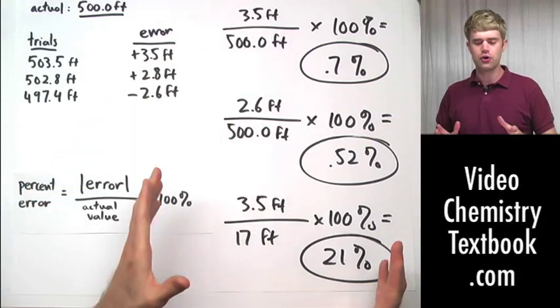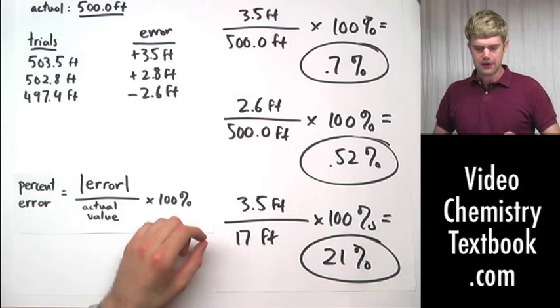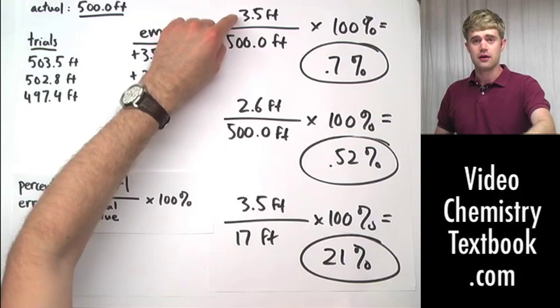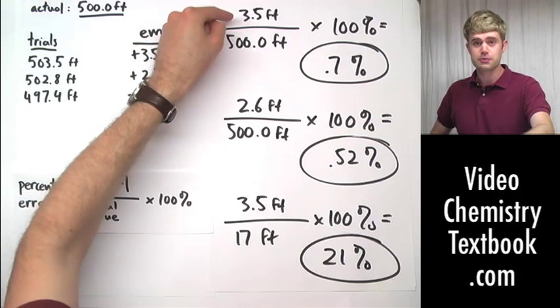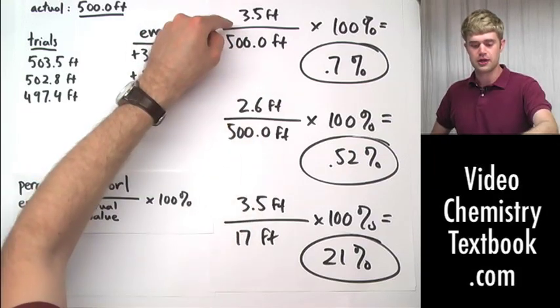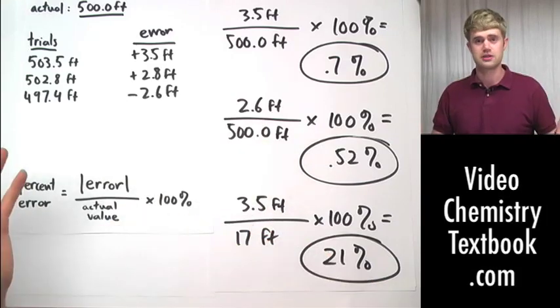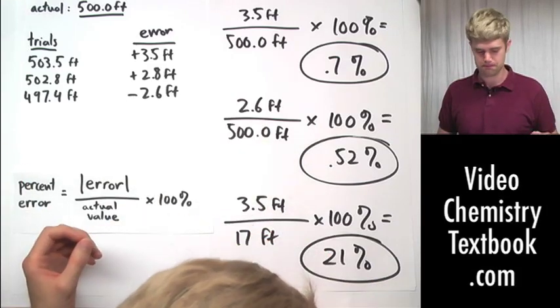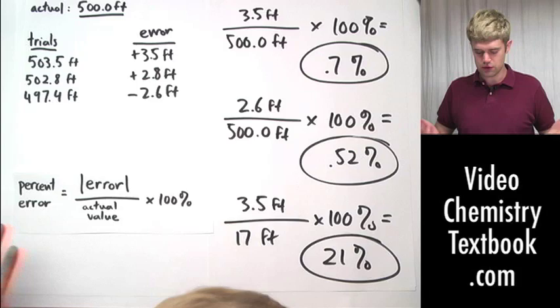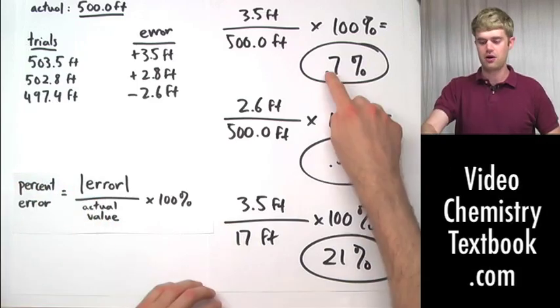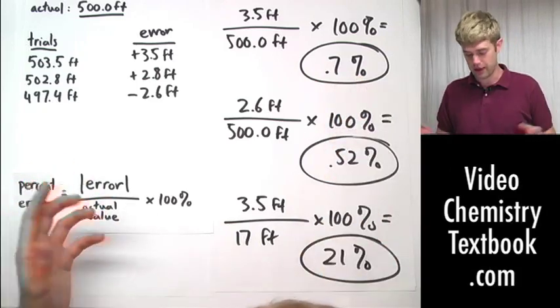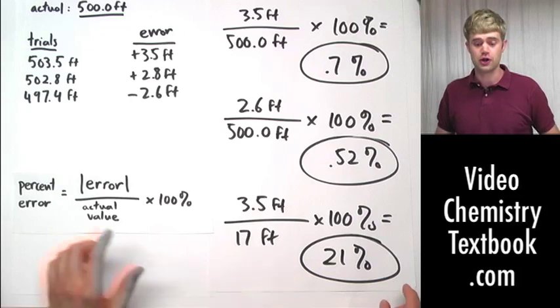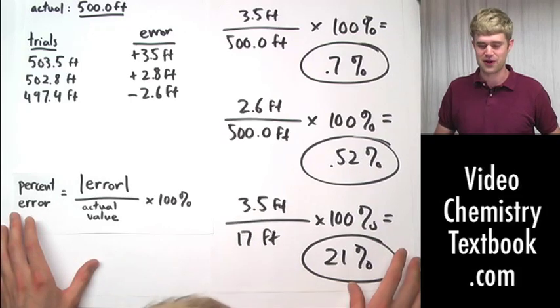Now the reason why is because 3.5 is a much bigger part of 17 than 3.5 was of 500. But I did this example to show you what I was talking about earlier. That 3.5 feet might be a large percentage error or a small percentage error depending on the size of what we're measuring in the first place. That's why percent error is useful. It tells us, should we worry about it? 0.7% not really, 21% yeah we should. That's a really bad error. That's way too much.